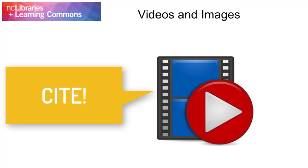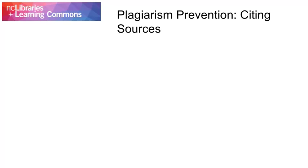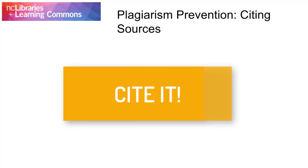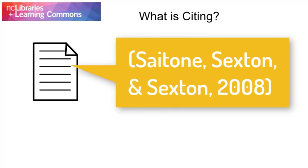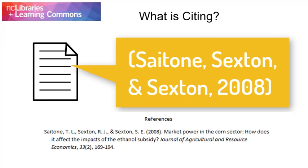Here's another thing to keep in mind: plagiarism also applies to media sources, such as videos and images, so don't forget to cite those too. Did you notice a theme in the previous examples? Plagiarism only occurs if the original source is not cited. Citing sources involves placing a short reference to the original work in the text of your paper, and a full reference in the list at the end.